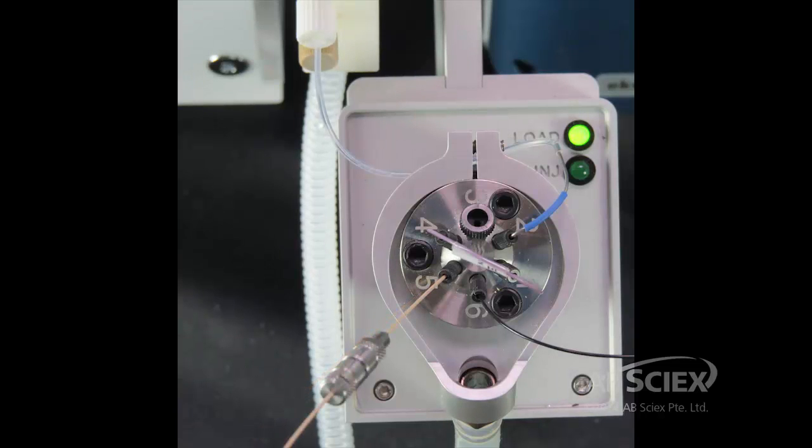If a guard column is to be used, fit the guard column to port 5, and fit the peak seal tubing to the guard column.